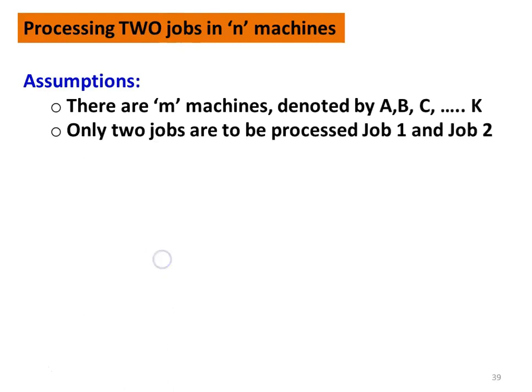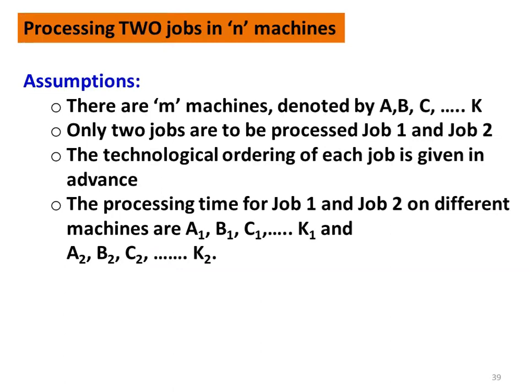Processing two jobs in N machines. The assumption: there are M machines denoted by A, B, C up to K. There are only two jobs, designated as job one and job two. The technological order of each job is given in advance — what machines are involved, the time required, and the sequence. The processing time for each job in different machines A1, B1, C1 up to K1 and A2, B2, C2 up to K2 are also known.